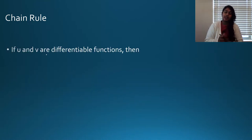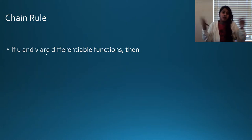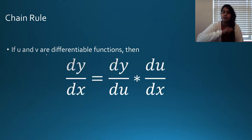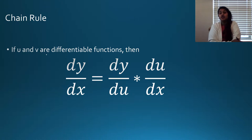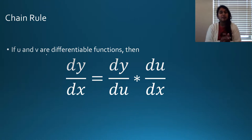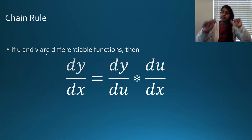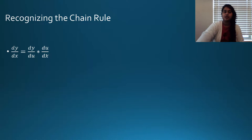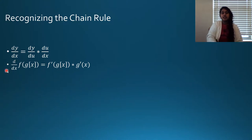So what is the chain rule? If I have two functions that are both differentiable, then the derivative is going to be the derivative of Y with respect to U, times the derivative of U with respect to X. I could also see it as: the derivative of F of G of X equals the derivative of F — leaving G of X alone — times the derivative of G of X.